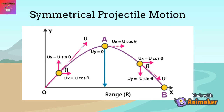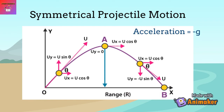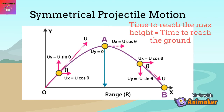Let's familiarize ourselves with the graph of projectile motion. This is a symmetrical projectile motion graph. The range is the distance between the launching point and the dropping point. Acceleration is negative g, and the velocity at the highest point equals zero. The time to reach maximum height equals the time taken to return to the ground.